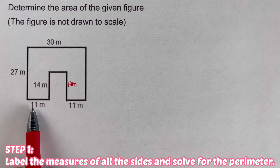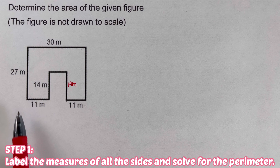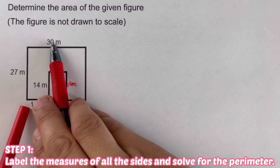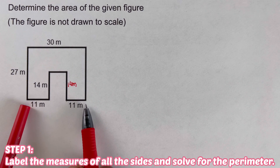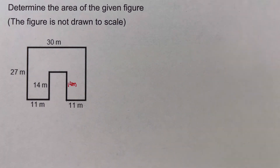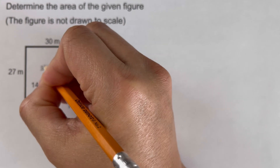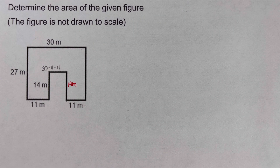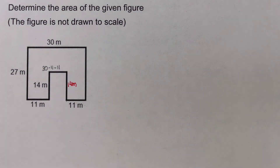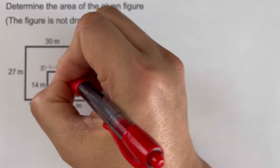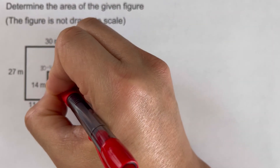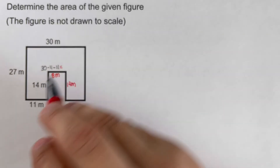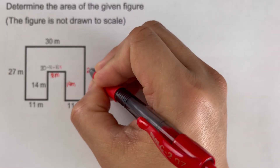We need to find the remaining missing side. This side is 11 and this other side is 11, and from end to end is 30. To solve for the middle side: 30 minus 11 minus 11 equals 30 minus 22, which is 8. So this side is 8 meters. The remaining side is also 27 meters, matching the other side.